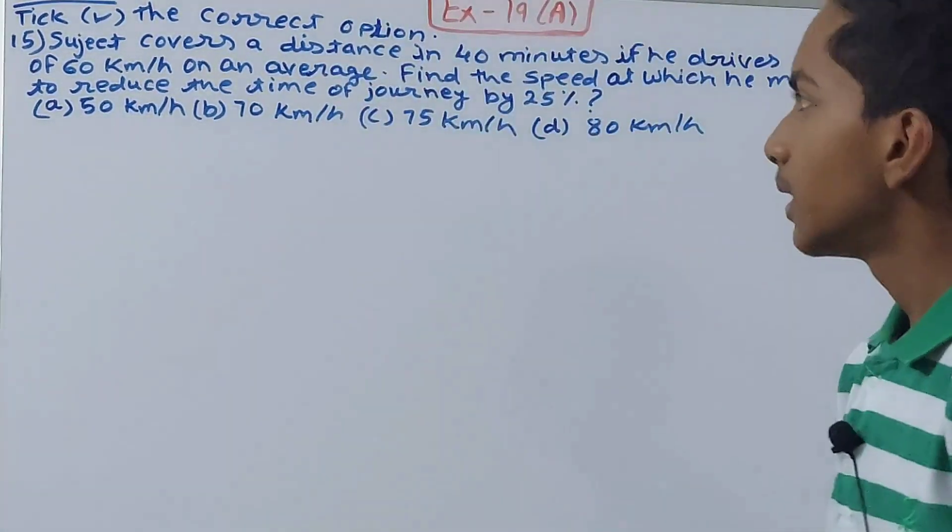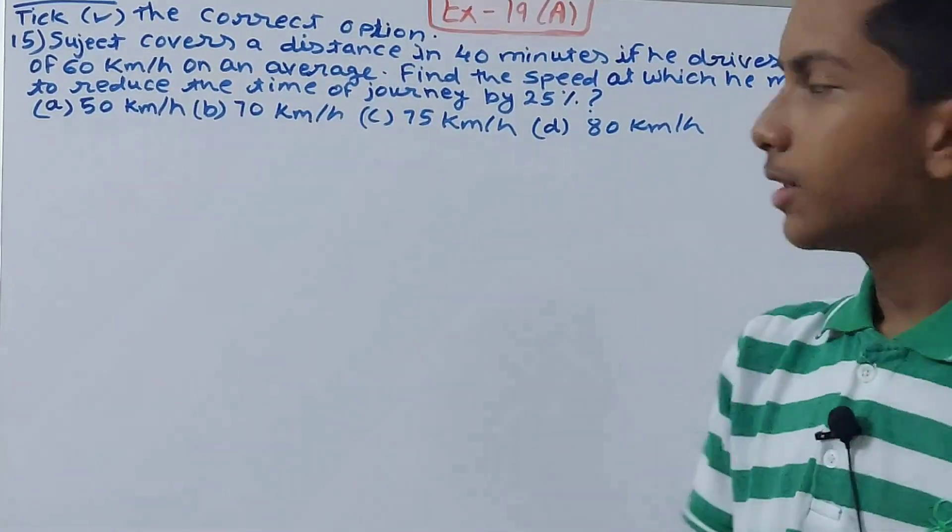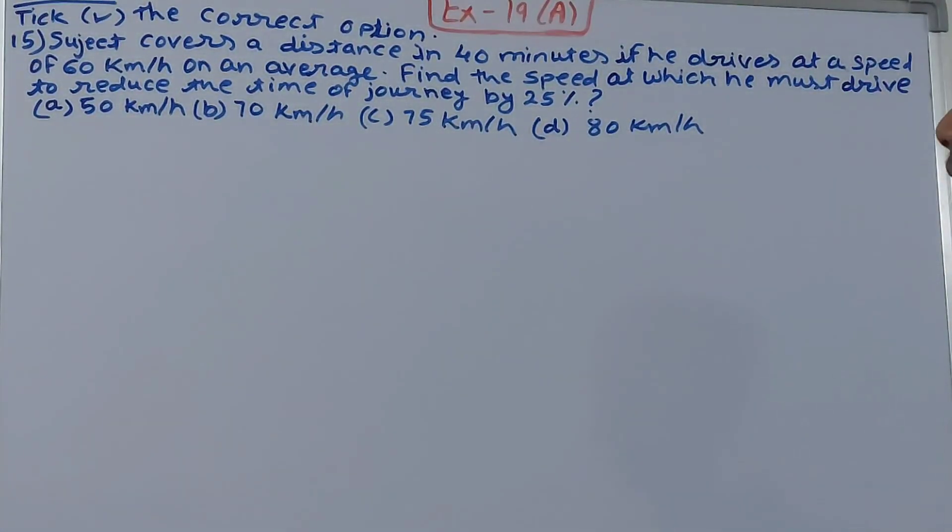This one says tick the correct option. So we have to tick the correct options and what have we got here? It says Sujit covers a distance in 40 minutes